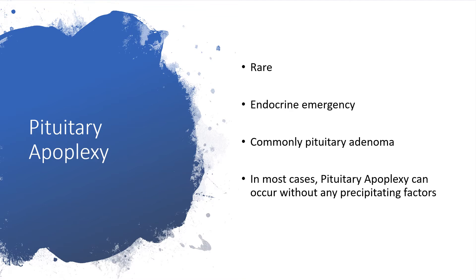Pituitary apoplexy is a rare condition. It is known to be an endocrine emergency. Why that? When we have neuroendocrine dysfunction, particularly in pituitary apoplexy, we will get into a big problem, particularly with the hypothalamic-pituitary-adrenal axis, giving us an Addisonian crisis. That is why it could be an endocrine emergency. It is commonly from pituitary adenoma. In most cases, pituitary apoplexy can occur without any precipitating factors.